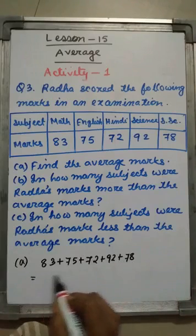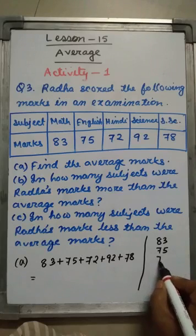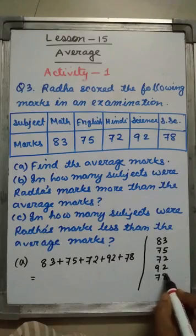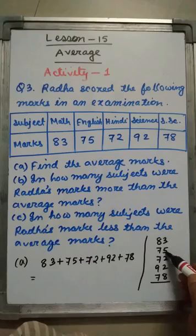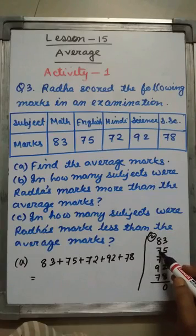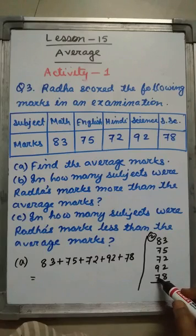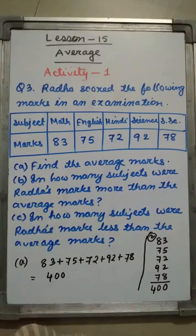Adding 83, 75, 72, 92, and 78: 3 plus 5 is 8, plus 2 is 10, plus 2 is 12, plus 8 is 20, 2 is carry. 2 plus 8 is 10, 7 plus 7 is 17, plus 7 is 24, plus 9 is 33, plus 7 is 40. So the total marks she has got is 400.